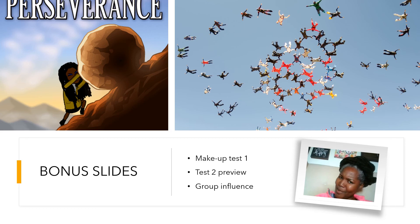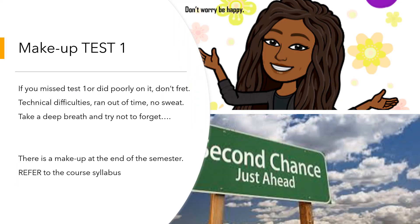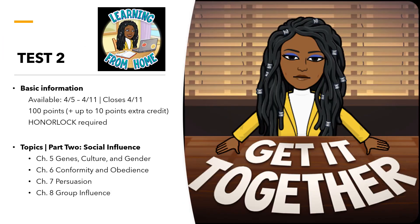If you missed Test 1 or did poorly, don't stress — take a deep breath. I give a makeup at the end of the semester, so check the syllabus for details. You'll be able to take an alternate version of Test 1 in the next few weeks. Test 2 will be available starting April 5th and will close April 11th. It will be worth 100 points, with an extra credit assignment worth up to 10 points.